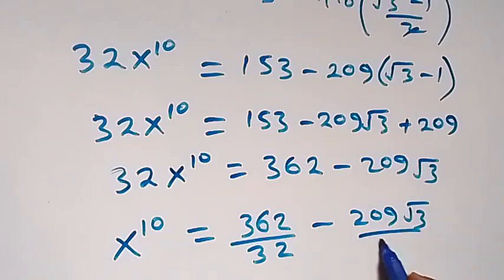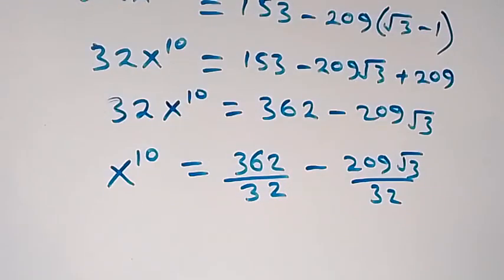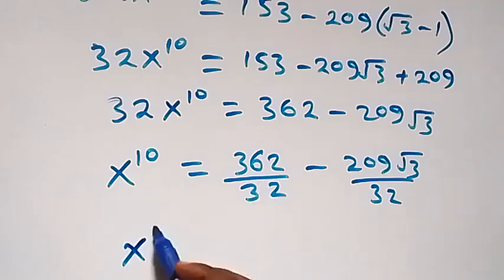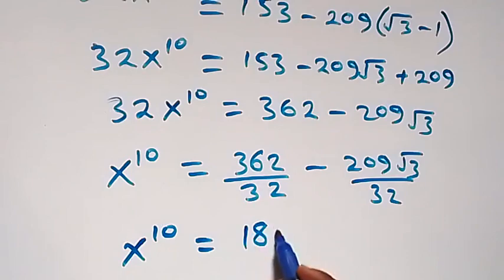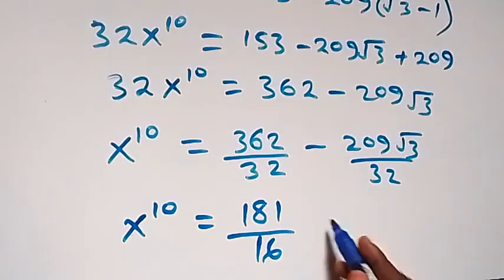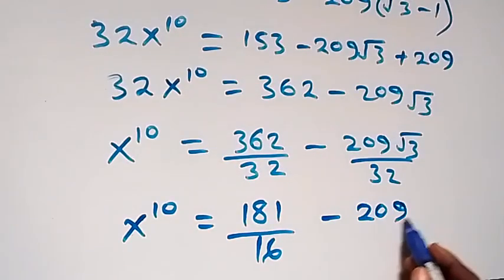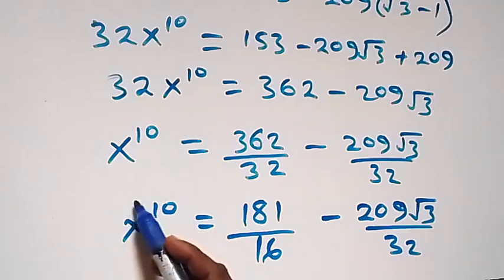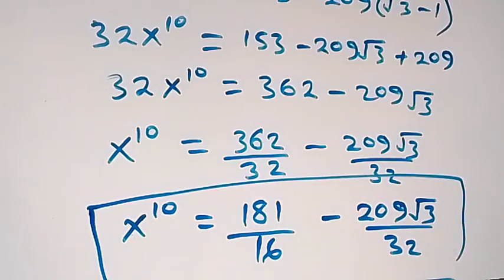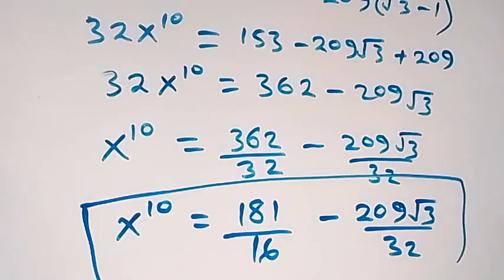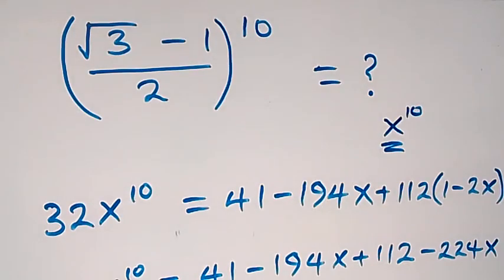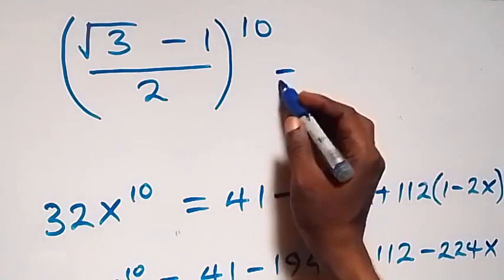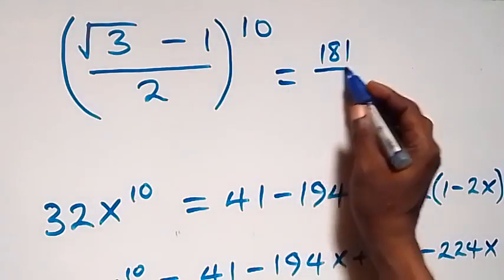We can reduce these fractions to get the final answer. So (√3 - 1)/2 raised to the power 10 equals 181/16 minus 203√3/32.